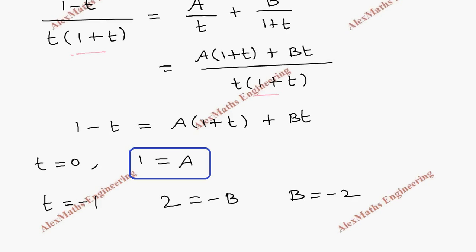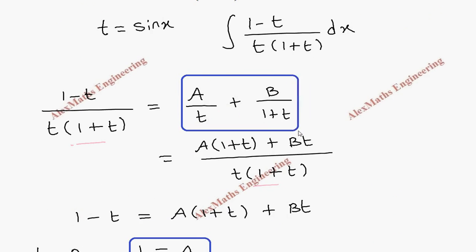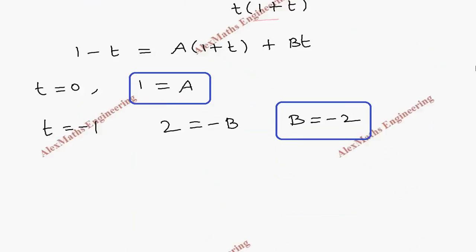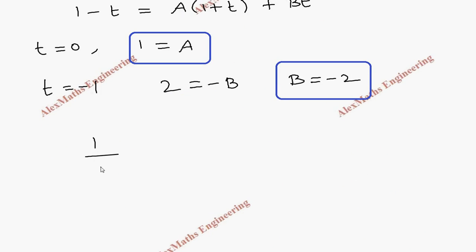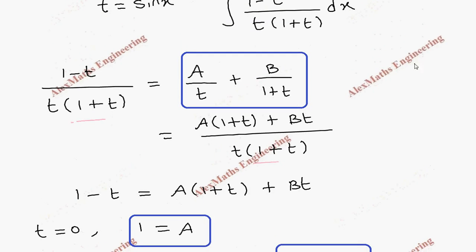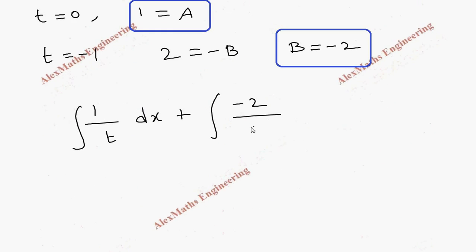After finding A and B, we substitute these values back where we applied the partial fraction rule. So we have A over t, which is 1 over t, and the second term is minus 2 over (1 plus t). The integral is with respect to x.